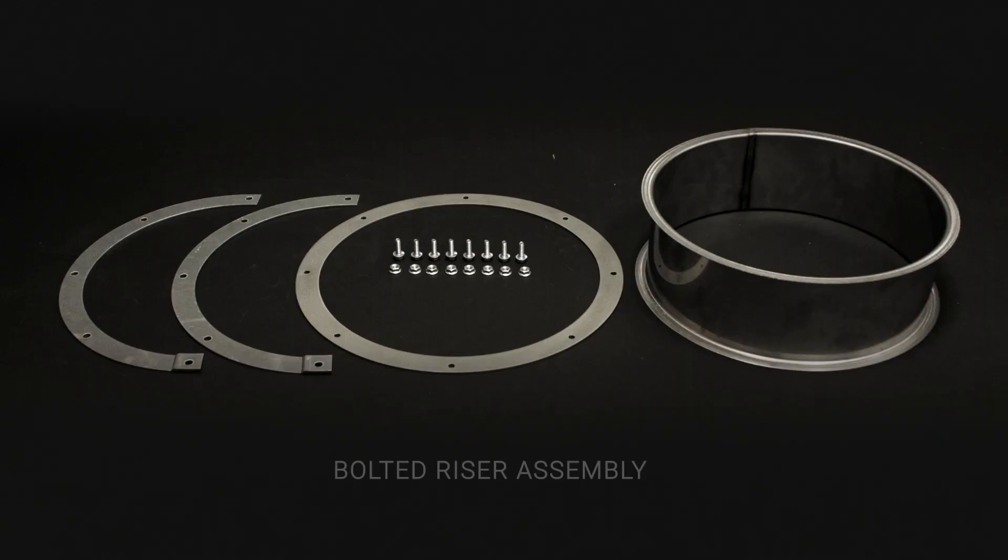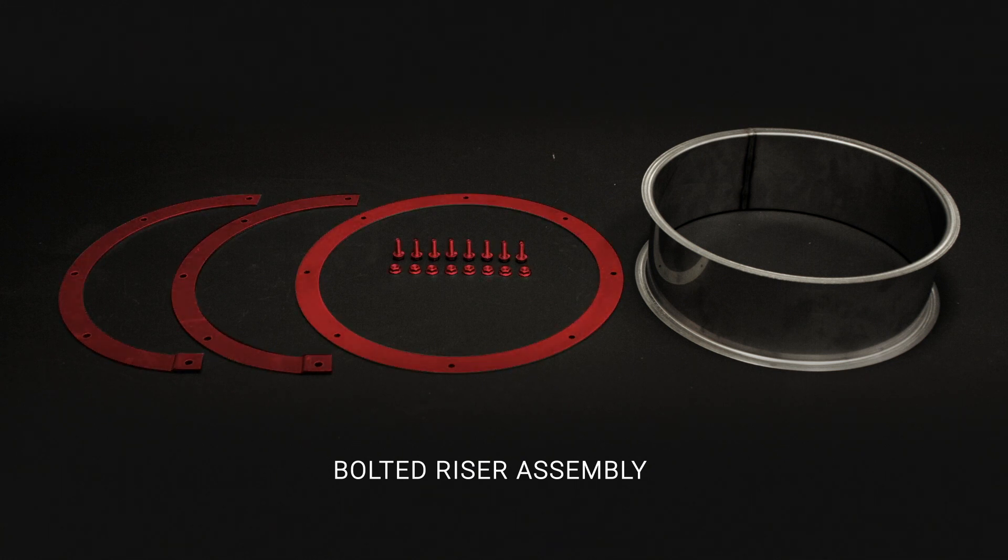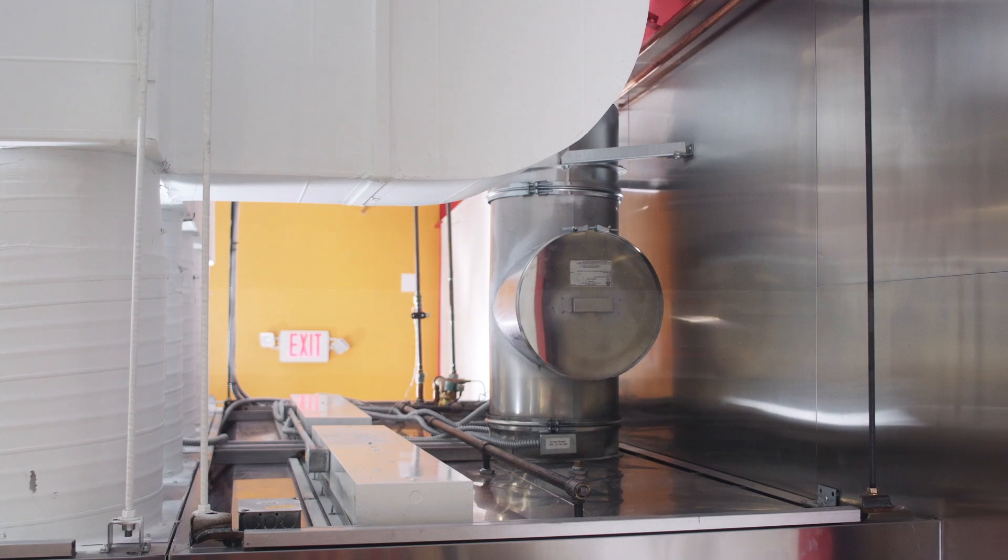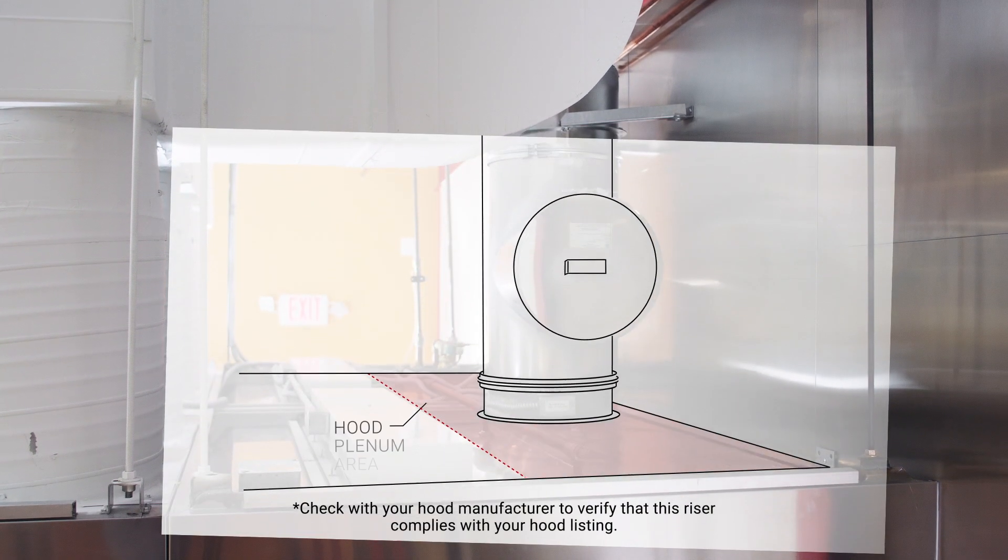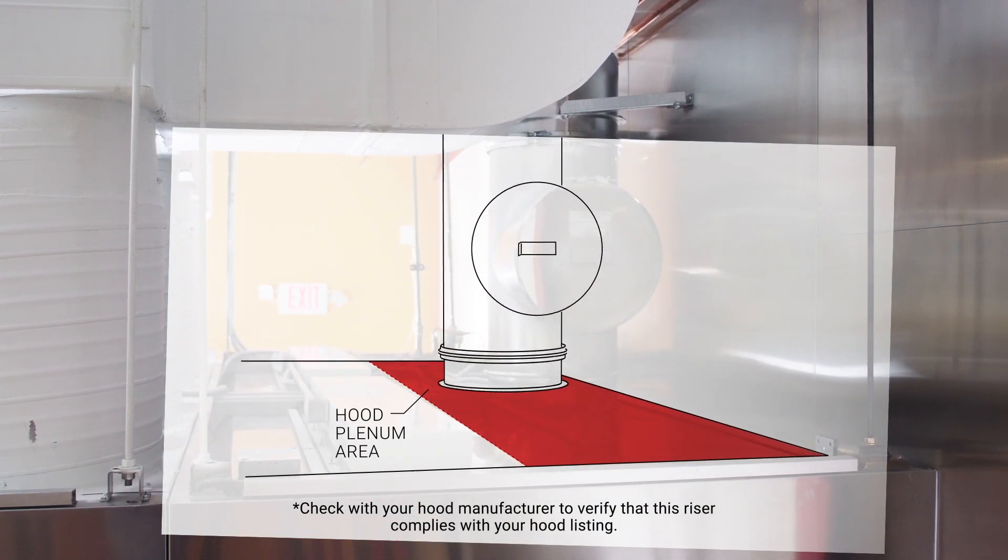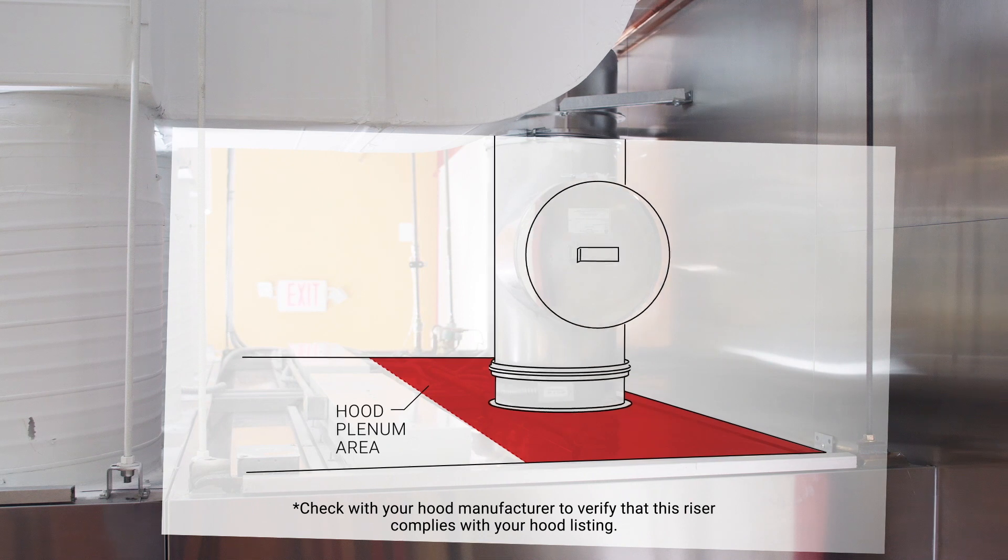You may receive a weld-on or bolt-on riser. Bolted risers come with two half rings, one full ring, and quarter-twenty mounting hardware. Field installed risers accommodate unknown jobsite conditions as the jobsite installer can decide on the final location of the riser.